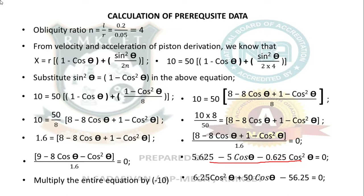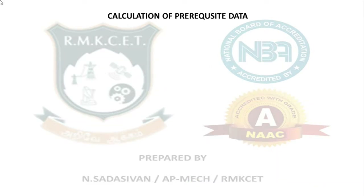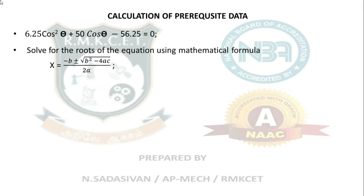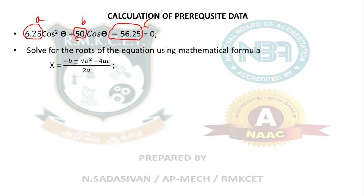Solve this quadratic equation for cos θ using the formula: x equals negative b plus or minus root of (b² minus 4ac) divided by 2a. Here x is cos θ. Identify coefficients: a equals 6.25, b equals 50, c equals minus 56.25. Substitute into the quadratic formula: cos θ equals (minus 50 plus or minus root of (50² minus 4 times 6.25 times minus 56.25)) divided by (2 times 6.25).